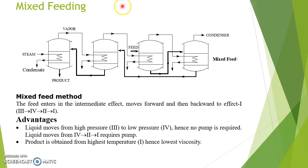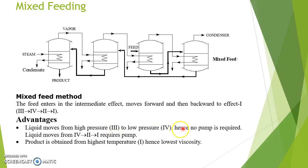In mixed feeding, the feed enters the third effect evaporator, then moves to the fourth effect, then to the second effect, and finally to the first effect. An advantage of this method is that liquid moves from high pressure to low pressure between the third and fourth effects, so no pumping is required there. However, liquid moving from the fourth to the second to the first requires pumping. The product is obtained at the highest temperature, hence with the lowest viscosity.